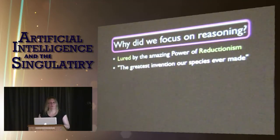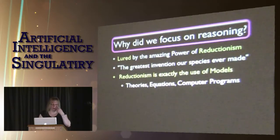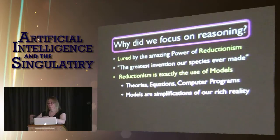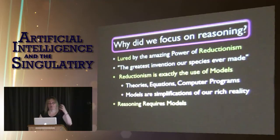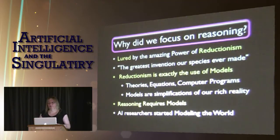Reductionism is exactly the use of models. Models are theories, equations, scientific models, naive models we don't publish, computer programs — simplifications of a rich reality. We take a rich reality, throw away that which doesn't matter, measure what is important, get numbers, use calculators, get a result, and apply it back. Reasoning requires models of this kind — we deal with internal models, or even explicit ones like F = ma, Newton's second law. So, like good scientists, AI researchers in the 1950s started modeling the world because that was the obviously scientific thing to do.